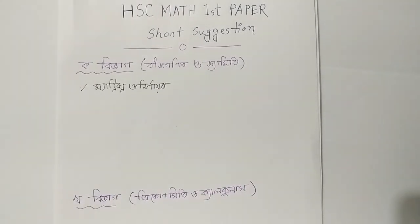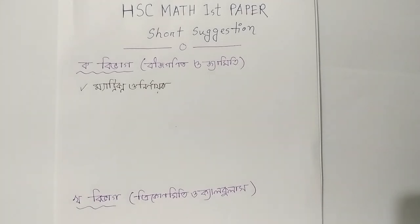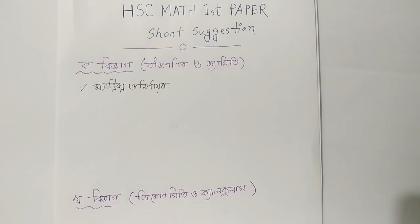We are able to find a way to think about things. We have to look at the matrix and the inverse of the matrix. We have to look at the matrix as well, and we are able to look at the matrix in this matrix.